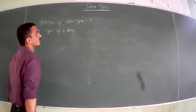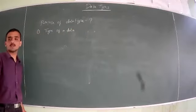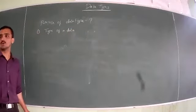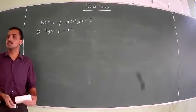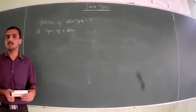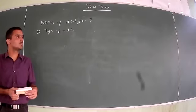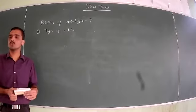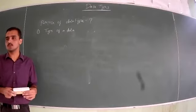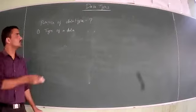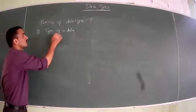The computer should know what type of data is being stored. For example, the value '1' and the value '25.25' — these two are different types of data. So the computer must know what type of data it is dealing with.